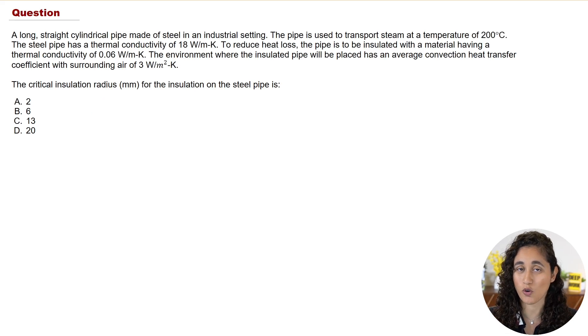A long straight cylindrical pipe made of steel in an industrial setting. Now the pipe is used to transport steam at a temperature of 200 degrees Celsius. Now we are given the thermal conductivity of the steel pipe, and what we want to do is reduce the heat loss. So insulation is being added to the pipe with the material having a thermal conductivity of 0.06. Now the environment where the insulated pipe will be placed has an average convection heat transfer coefficient with surrounding air of 3.